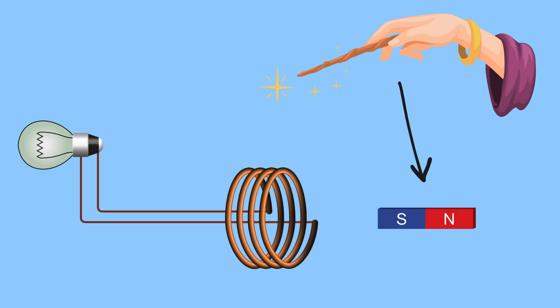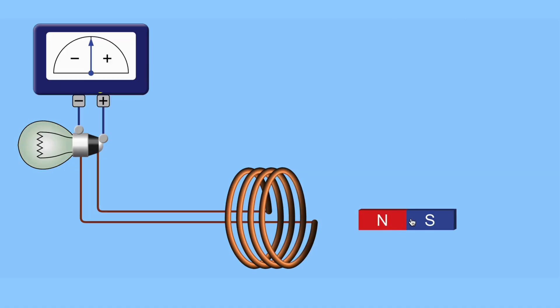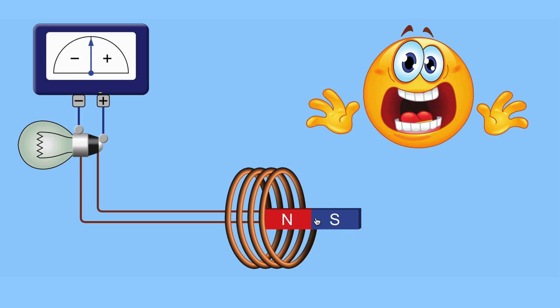But now here comes the magic—or I should say, science. He gently moved the magnet into the coil. Suddenly, the needle flicked. Faraday's heart must have skipped a beat. Electricity had been created, just by moving the magnet.